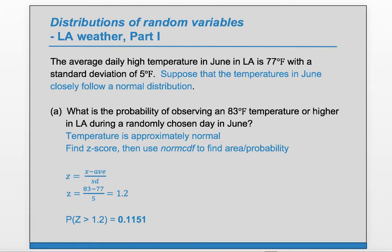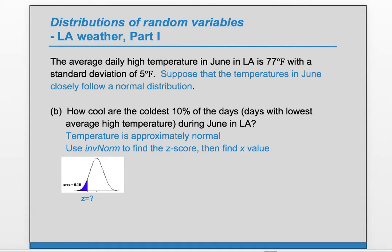This gives us an area of 0.115, so about 11.5% probability of observing a temperature of 83 degrees Fahrenheit or higher. For part B, again observing that the distribution is normal so we're allowed to use the normal distribution. We're interested in the coldest 10% of the days and we want to know the z-score such that 10% of the area is to the left of that z-score.